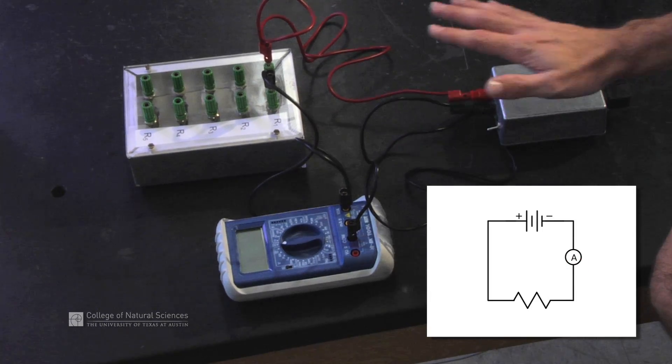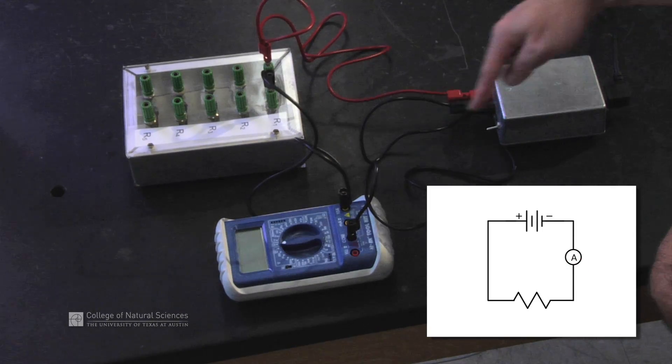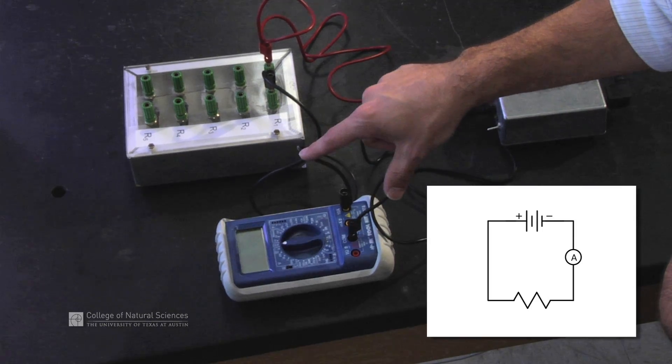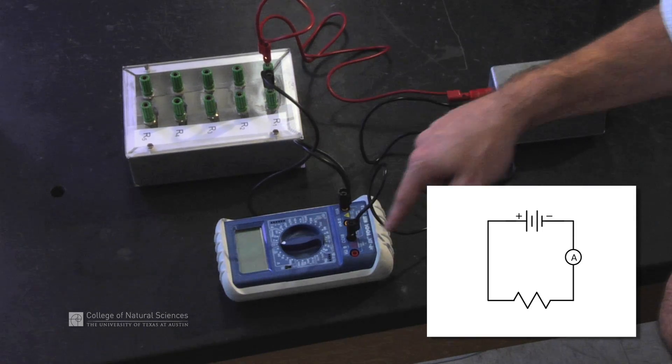Once we have everything on, we check our circuit. We see that our digital multimeter is hooked up in series.